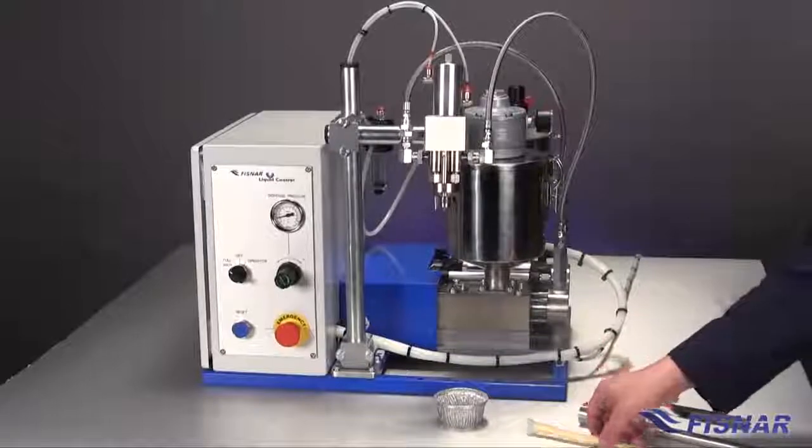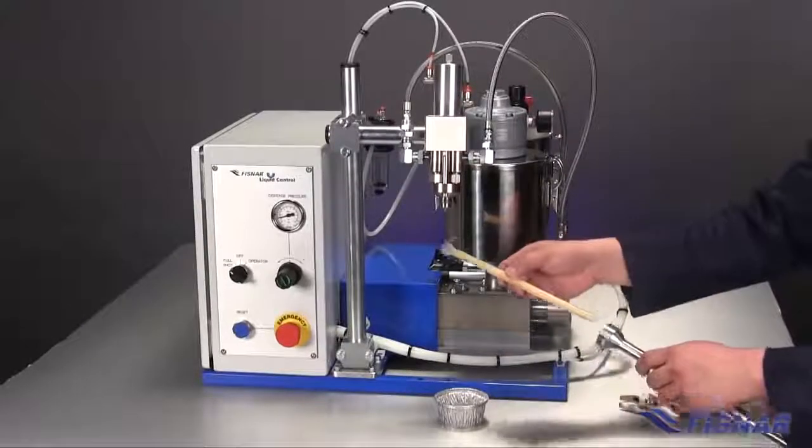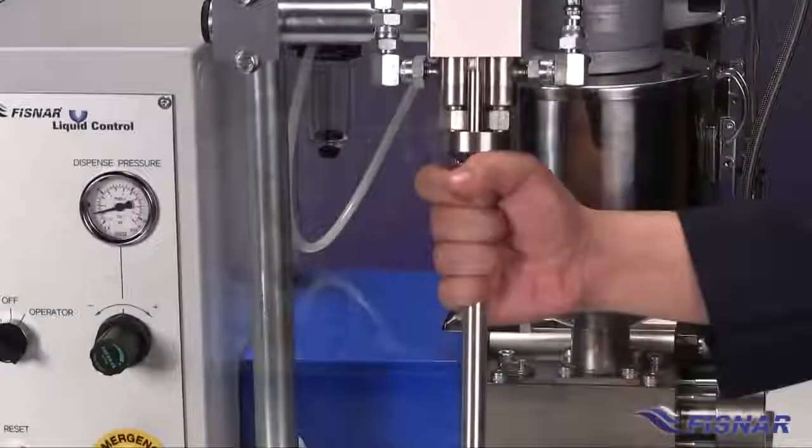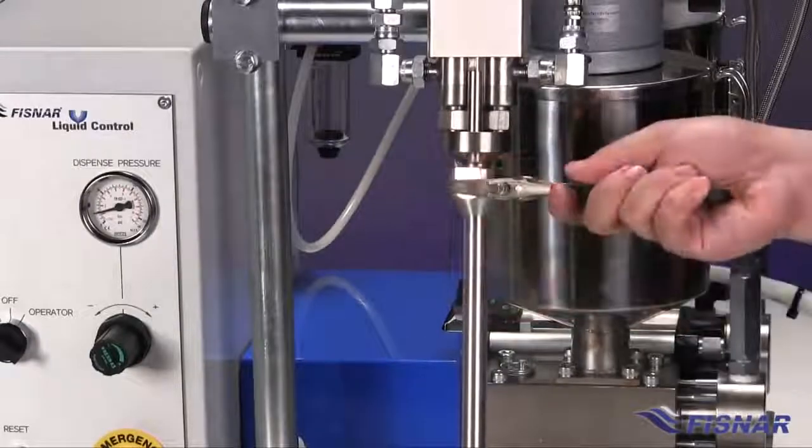The next stage is to install a static mixer and mixer shroud. Install the mixer into the shroud, hand tighten, and finally tighten with an adjustable wrench.